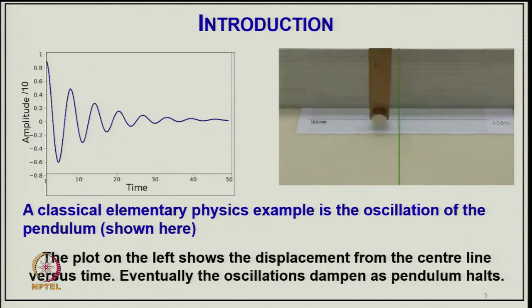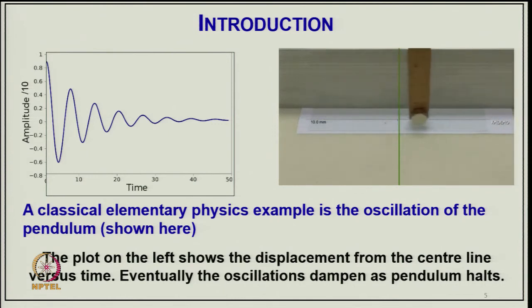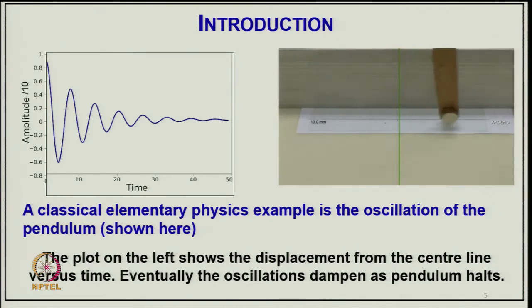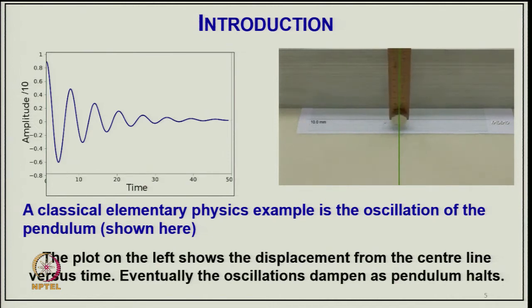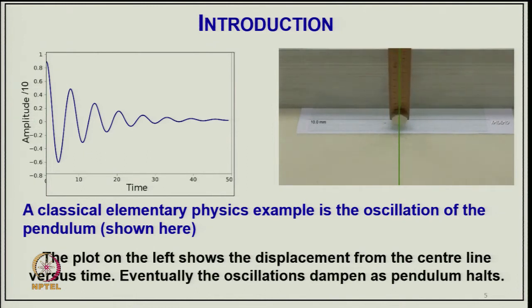A typical example is how position moves with respect to time and converges to a final steady-state operating point. A classical elementary physical example is the oscillation of a pendulum. The plot on the left shows the displacement from the center line versus time, and eventually the oscillations dampen as the pendulum halts.